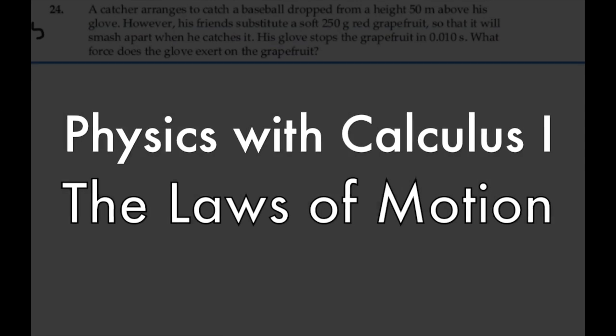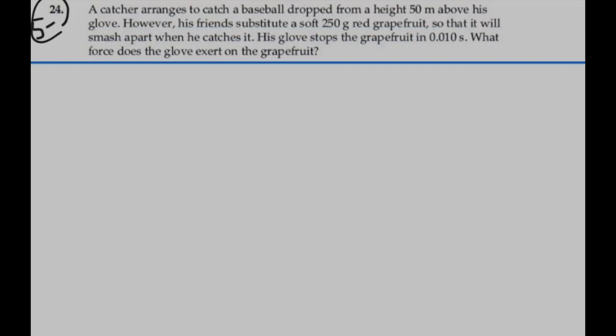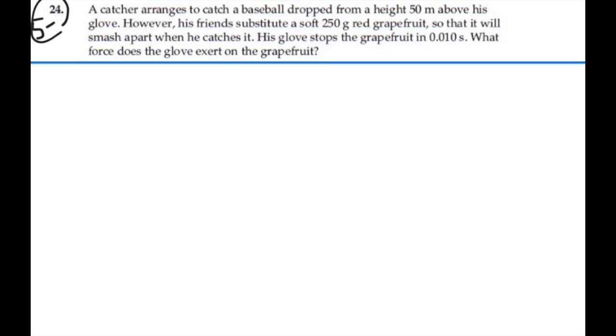Here's problem 5.24. The catcher arranges to catch a baseball dropped from a height of 50 meters above his glove. However, his friends substitute a soft 250 gram red grapefruit so that it will smash apart when he catches it.